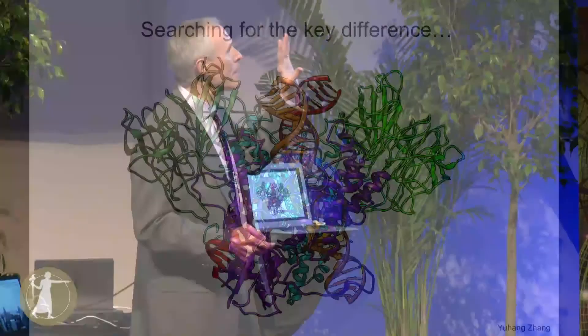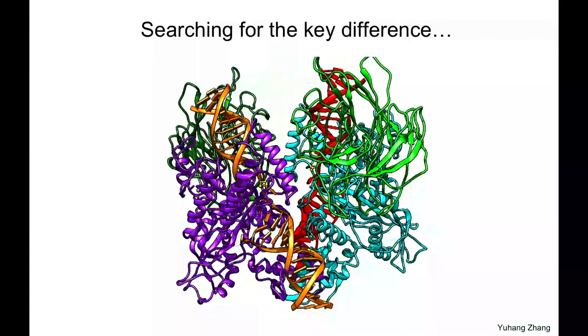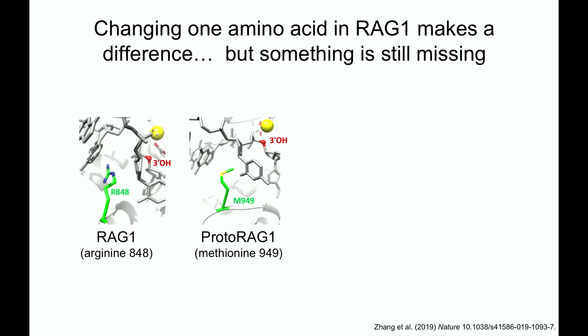We were actually less interested in similarities than differences. This is where I give full credit to Yu Hong, who spent a ton of time staring at the structure trying to find something that would jump out at him. One particular amino acid caught his eye deep in the heart of the proto-RAG1 protein: amino acid number 949. Yu Hong noted that 949 is a methionine in proto-RAG but is actually an arginine in RAG1 — chemically extremely different amino acids lying at a very provocative place very close to the active site. Crucially, in all jawed vertebrates this position is an arginine, and in all invertebrates it's a methionine.